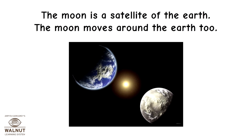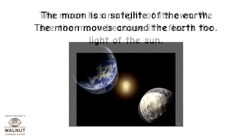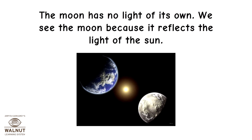The moon is a satellite of the Earth. The moon moves around the Earth too. The moon has no light of its own. We see the moon because it reflects the light of the sun.